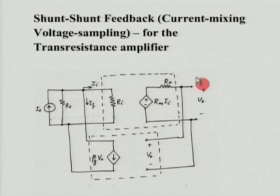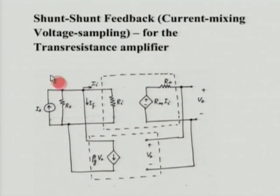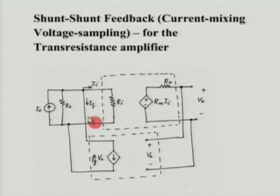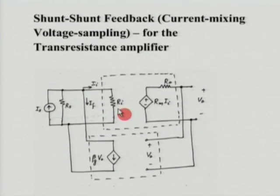Coming to the last one — the transresistance amplifier. The input is a current and the output is a voltage. Ideally, with current input, R_i should be 0, and by connecting a shunt connection at the input we move towards that. If the input resistance without feedback is R_i, the one with feedback would be R_i / (1 + Aβ). At the output side, we sample a voltage, and with a shunt connection there, the output resistance goes down — and since the output is a voltage, ideally R_naught should be 0, so it moves in that direction.